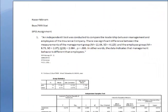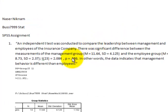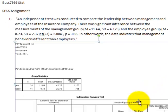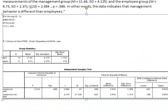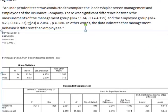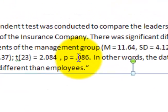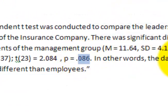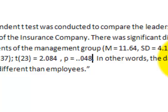Now I'm looking at your t-test assignments. You got this stuff right, except the p-value — according to the chart down here, the p-value should have been 0.048, and you got 0.086. So it should have been 0.048. Be careful when you write this stuff down. But everything else looks pretty good.